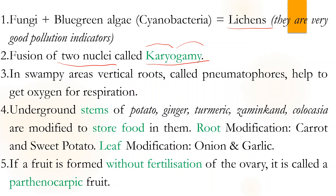In swampy areas, the roots of plants are vertical — pointing towards the sky — so that plants can get oxygen. Otherwise in water or swamp, respiration would not be possible. These structures are called pneumatophores.